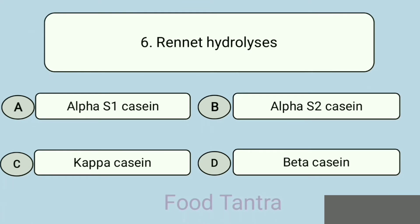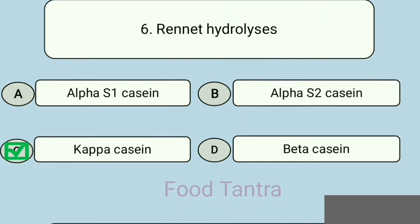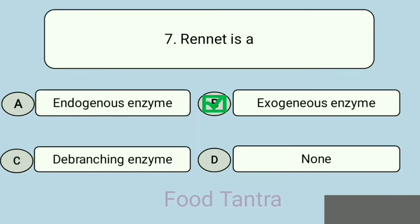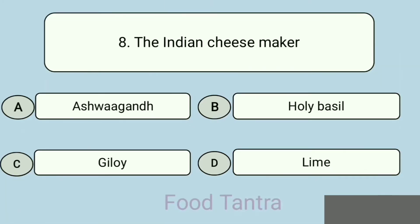Question 6: Bromelain hydrolyses which casein? Option A: Alpha-s1 casein. Option B: Alpha-s2 casein. Option C: Kappa casein. Option D: Beta casein. Correct answer: Option C. Question 7: Bromelain is a — Option A: Endogenous enzyme. Option B: Exogenous enzyme. Option C: Debranching enzyme. Option D: None. Correct answer: Option B.